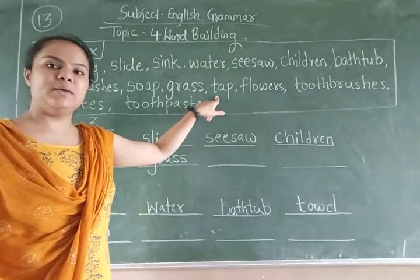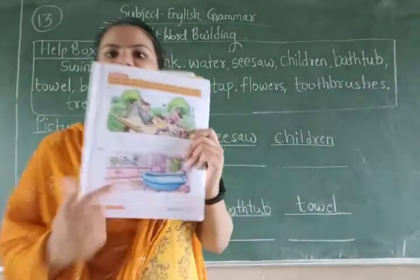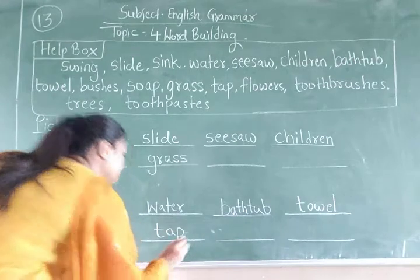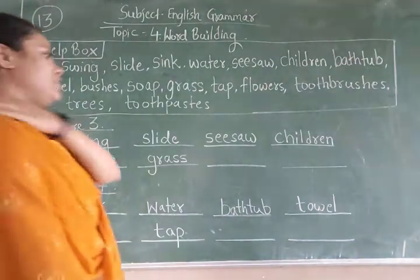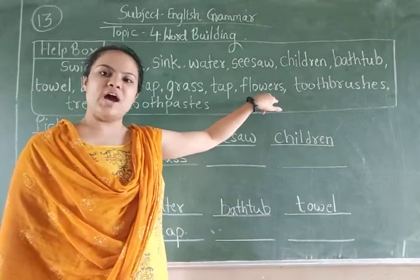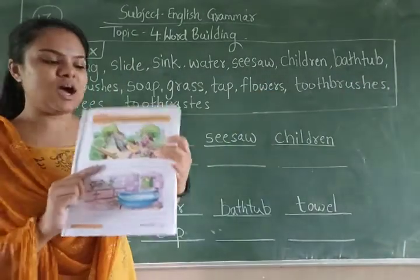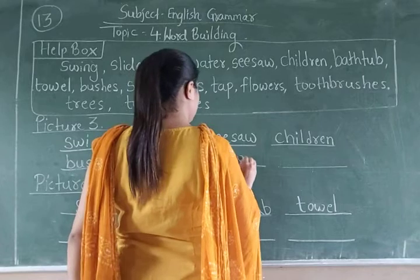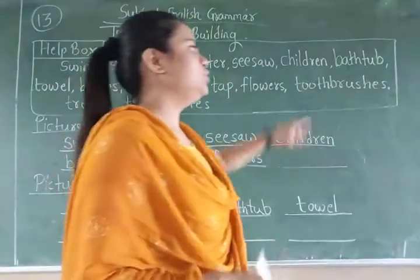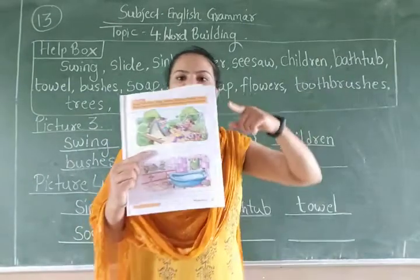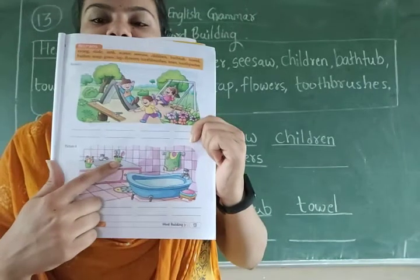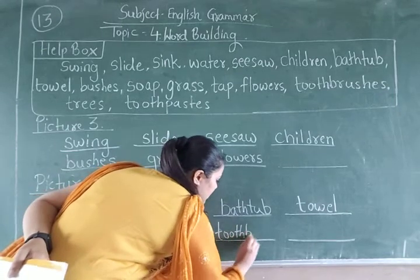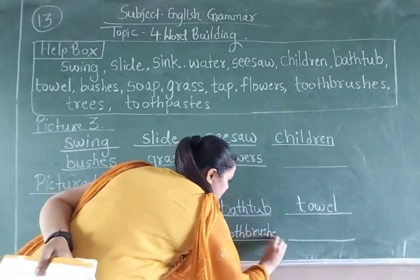After that: T-A-P — tap. Tap means nal. Write down tap in picture number 4. After that: F-L-O-W-E-R-S — flowers. Where are the flowers? In the garden, picture number 3. Here you can see the flowers. Write down F-L-O-W-E-R-S, flowers. Next: toothbrushes. Where are the toothbrushes? Here in picture number 4. Write down T-O-O-T-H-B-R-U-S-H-E-S, toothbrushes.